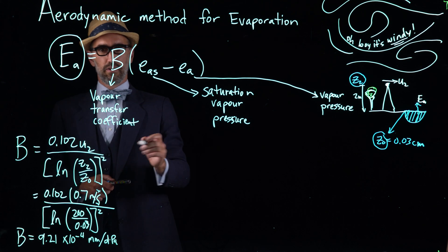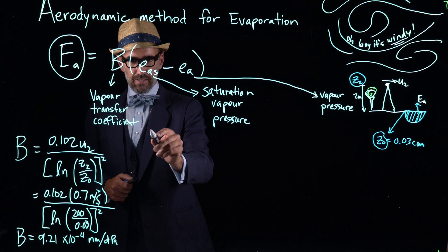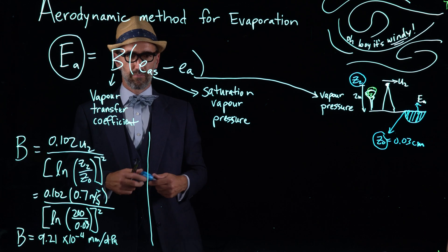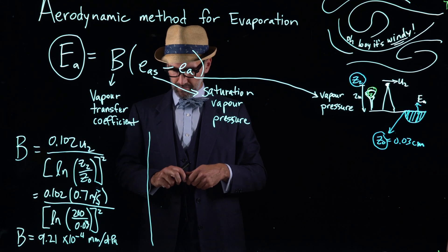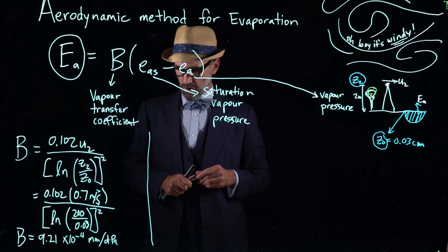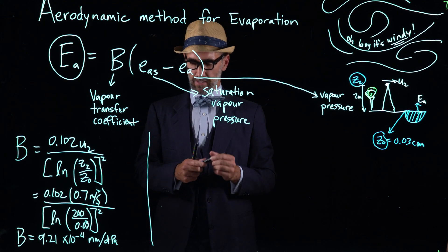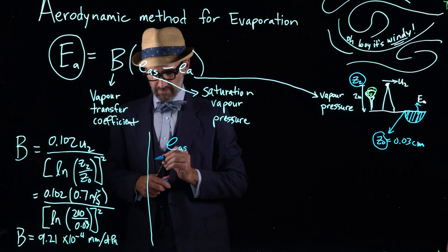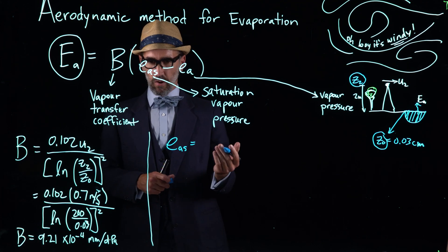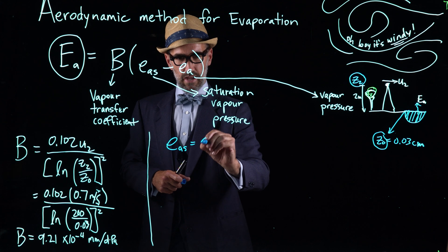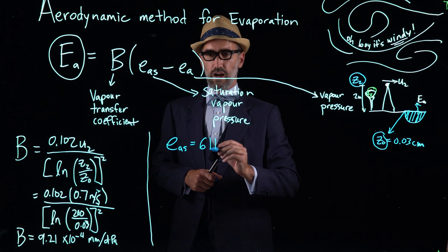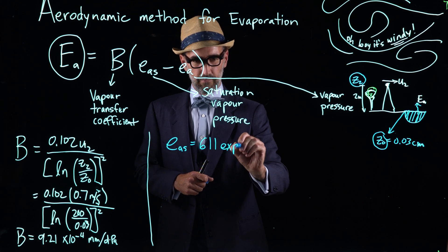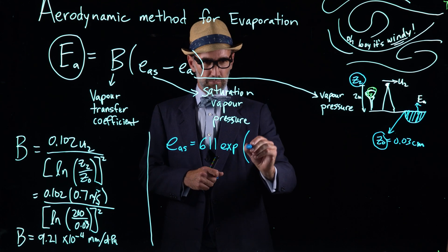So we have our vapor transfer coefficient. The next thing we want to calculate is our saturation vapor pressure. So if you remember the vapor pressure curve, this is where we are at a certain temperature on that curve. We're moving between saturated and unsaturated, so that is e small e sub AS. And this is a hyperbolic function that's temperature dependent.